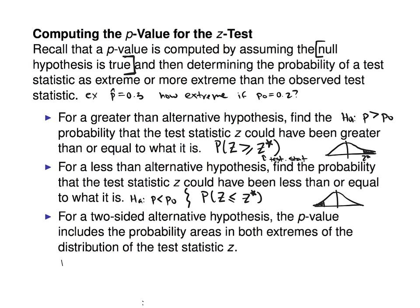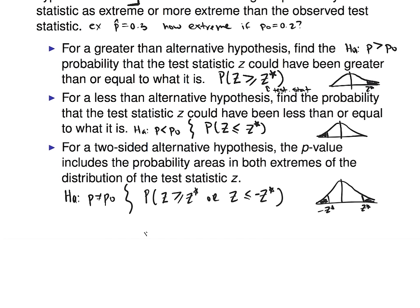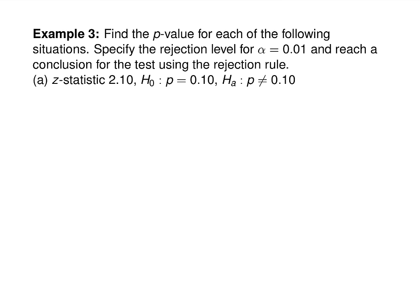For a two-sided test where H-A says P is not equal to P-naught, you could be extreme in either direction. We find the probability that Z is either bigger than or equal to the test statistic, or that Z is less than or equal to the negative test statistic — that is, both tails. You can compute this as twice the probability that Z is less than or equal to negative Z-star.